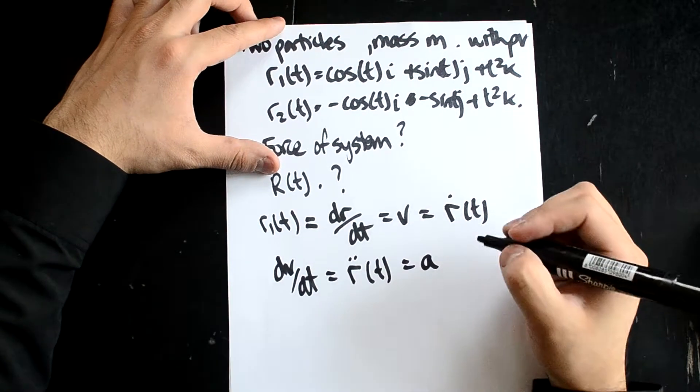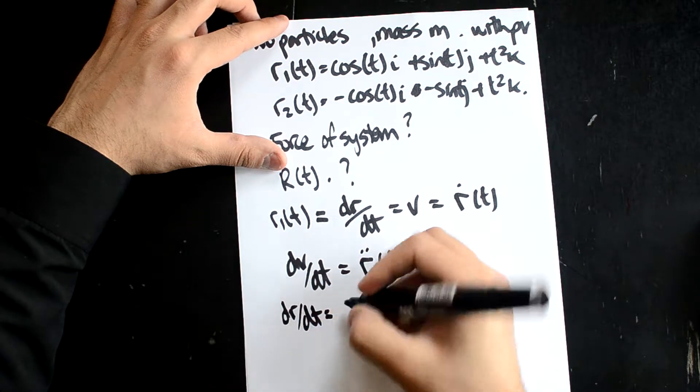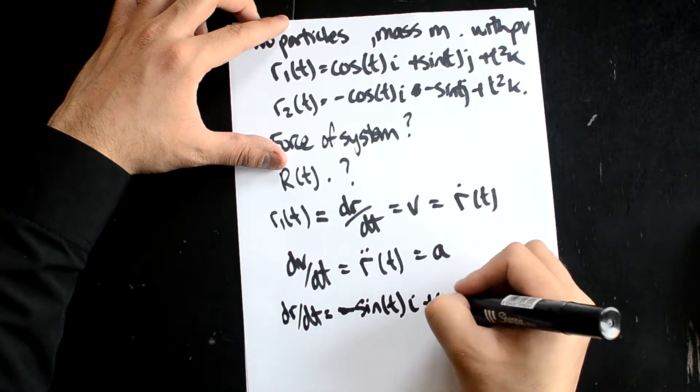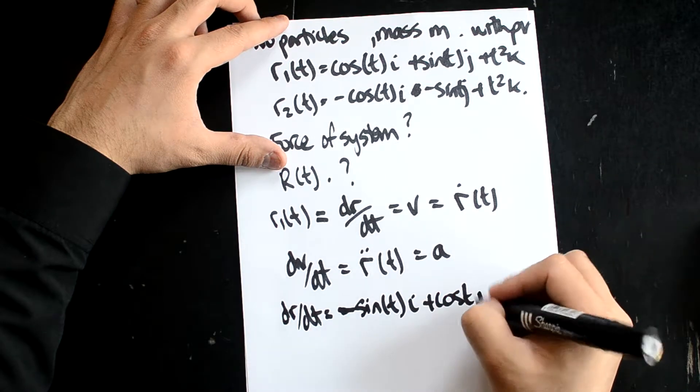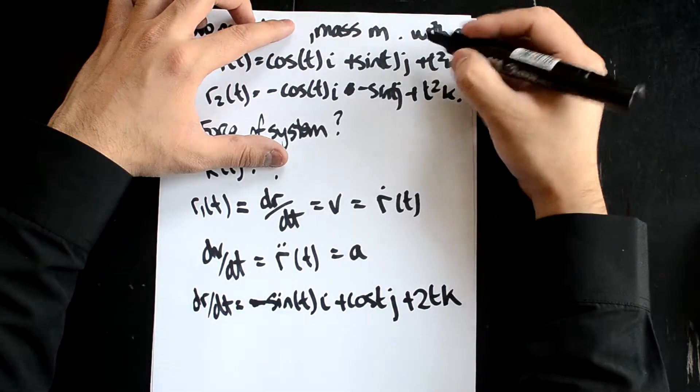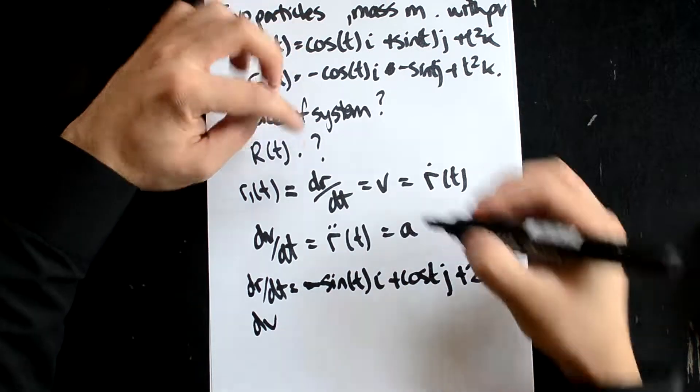We're going to differentiate R1(t) twice. So dr/dt is going to be minus sine(t)i plus cos(t)j plus 2tk. That's t squared. And then if we differentiate this, obviously now dr/dt equals V.